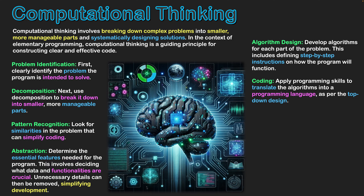Our next step is coding — applying programming skills to translate algorithms into a programming language. As per top-down design, we take that algorithm and can potentially break it into sub-programs, applying control structures, getting our modules, and applying as much as we've done from all our planning. All those things we found before we can now put into our code. Hopefully, because we did so much beforehand, there is not as much redundant coding required, and our coding should be quite efficient, allowing the program to process efficiently once it has been created.